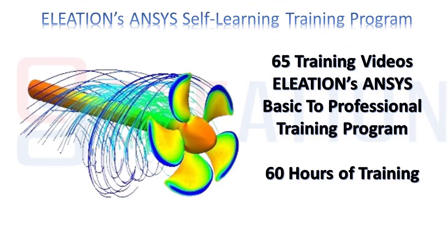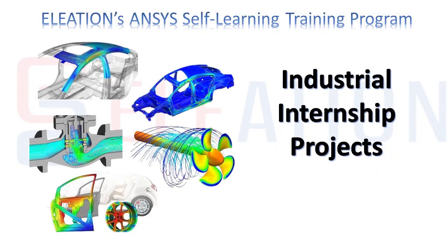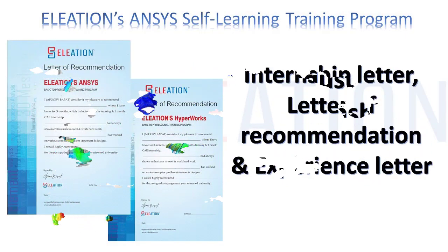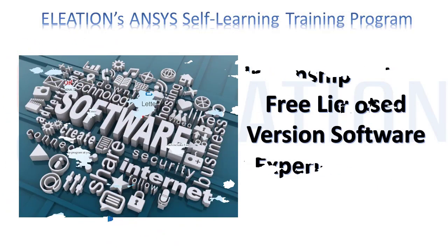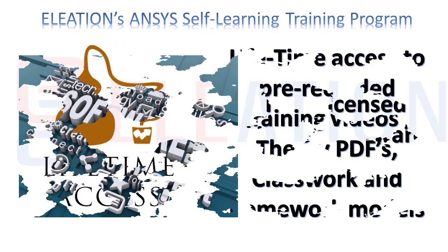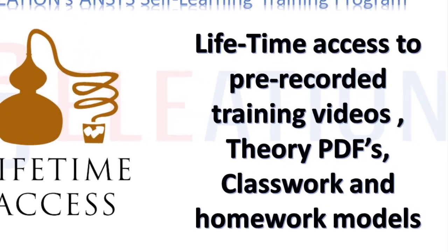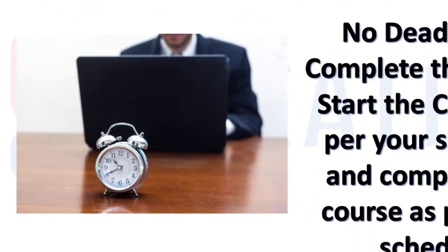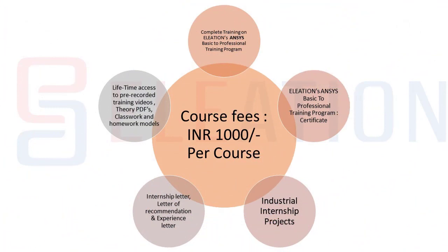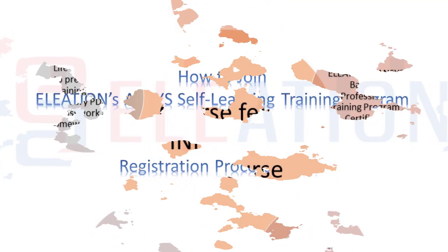The complete course content is covered in 65 session videos. You will get an industry-approved training certificate, industrial internship project, internship letter, letter of recommendation, and experience letter. We will also provide a free licensed version of the software. You will have lifetime access to complete course content, pre-recorded videos, theory PDFs, and classwork and homework models. There is no deadline to complete the training — you can start and complete it as per your schedule. The course fee is rupees 1000.